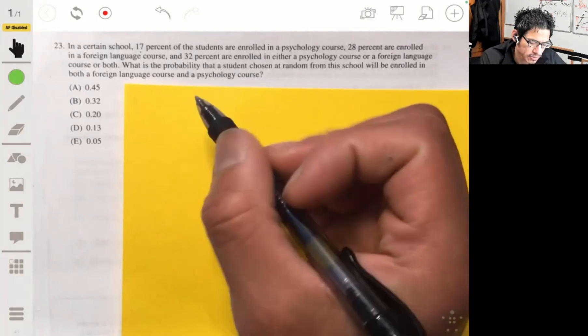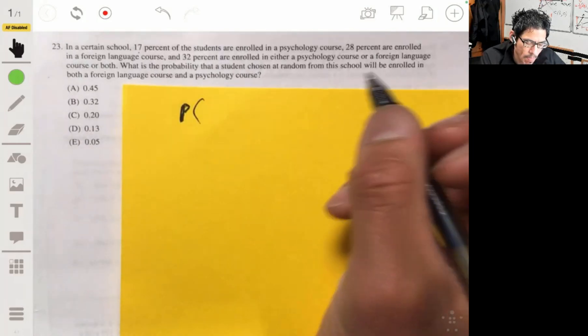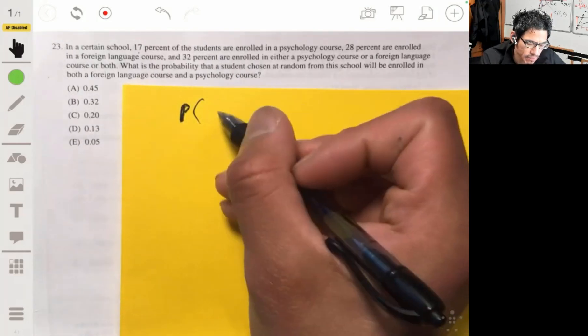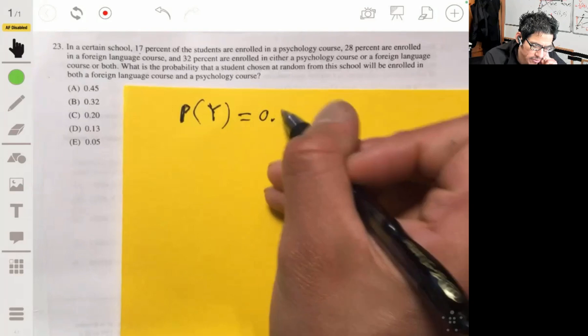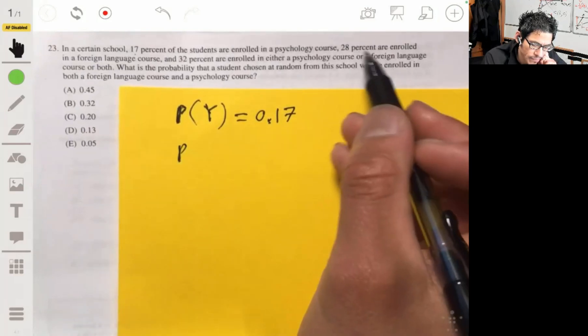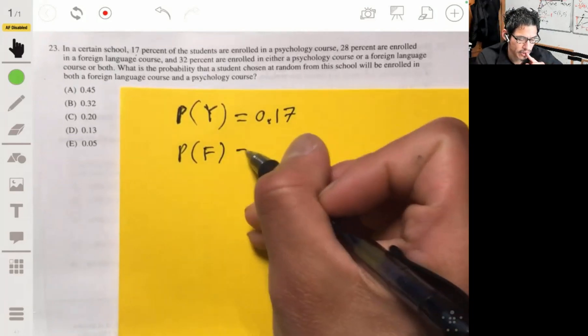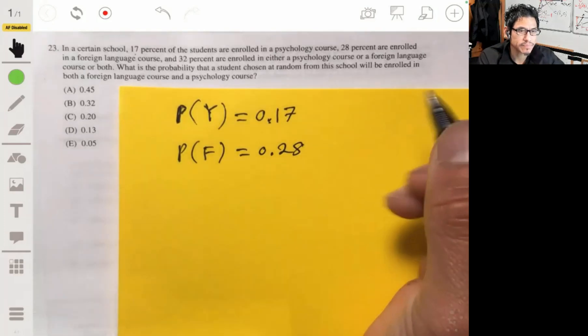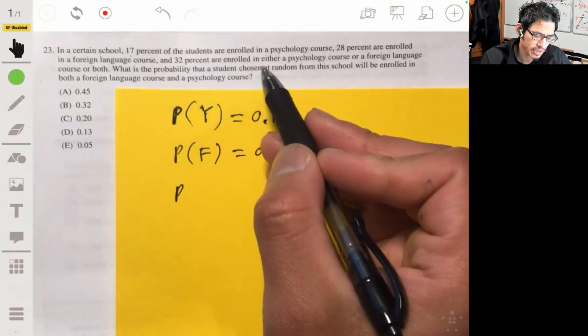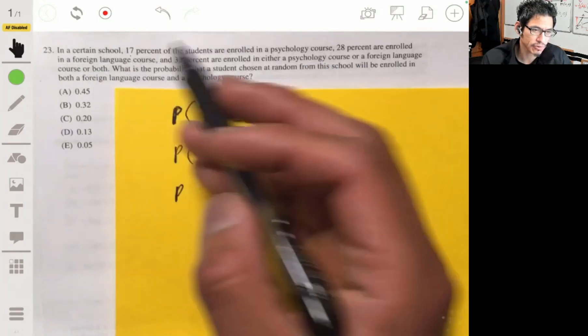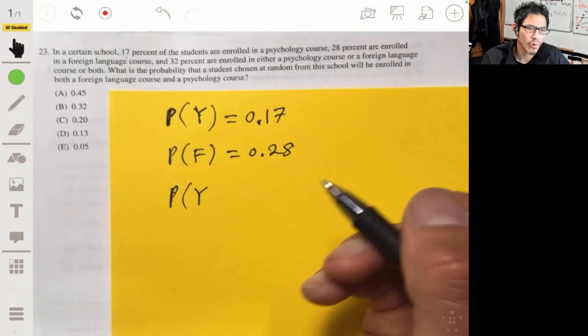Okay, so let's use some symbols to set this up. For psychology, let's put the probability of Y. The probability of being in a psychology course is 0.17. Foreign language, let's just put F, the probability of F is 0.28. And then the probability, it says 32% are enrolled in either a psychology course or a foreign language course, or both. So that would be the probability of Y or F.